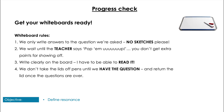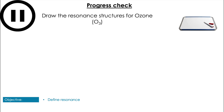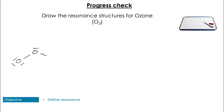Okay, so time for you to have a go at a question. Try and draw the two resonance structures that you would expect to find for ozone — that's O3. Pause the video to have a go at that. So when we're drawing ozone we can see that there's going to need to be a single and double bond in our Lewis structure. However we don't know which one should be single and which one should be double, so we can see that these two forms are the resonant structures.